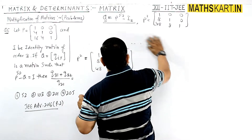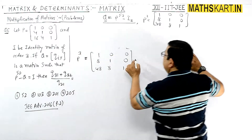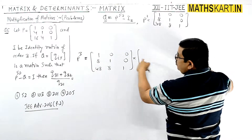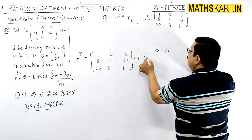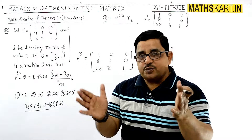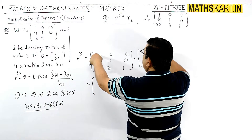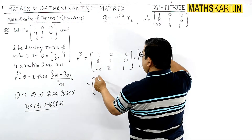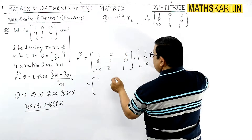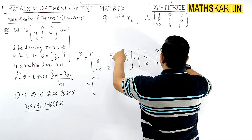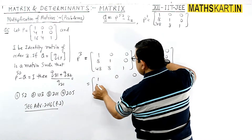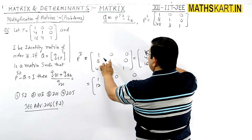To find P cubed, multiply P squared by P. That is [1 0 0 / 8 1 0 / 48 8 1] into [1 0 0 / 4 1 0 / 16 4 1]. The (1,1) position gives 1 plus 0 plus 0 equals 1, and the (1,2) and (1,3) positions give 0.